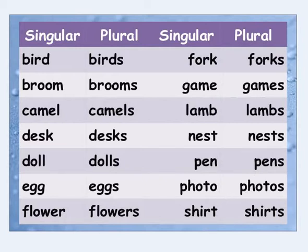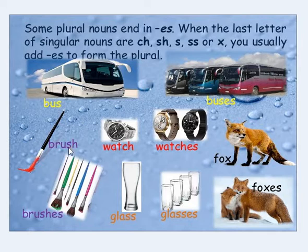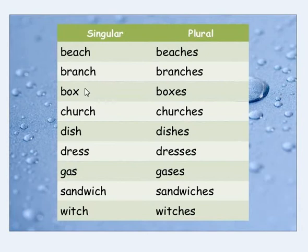Some plural nouns end in -es. When the last letter of a singular noun is ch, sh, s, or x, you usually add -es to form the plural. For example: bus/buses, brush/brushes, watch/watches, glass/glasses, fox/foxes, beach/beaches, brunch/brunches, box/boxes, church/churches, dish/dishes, dress/dresses, gas/gases, sandwich/sandwiches, witch/witches.